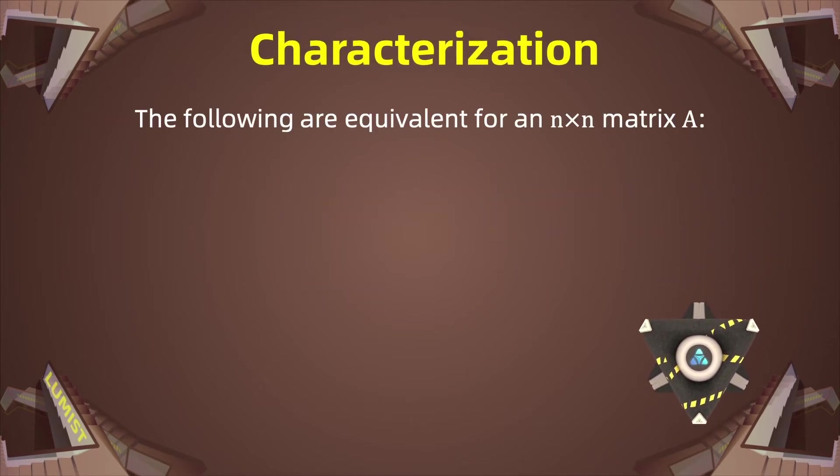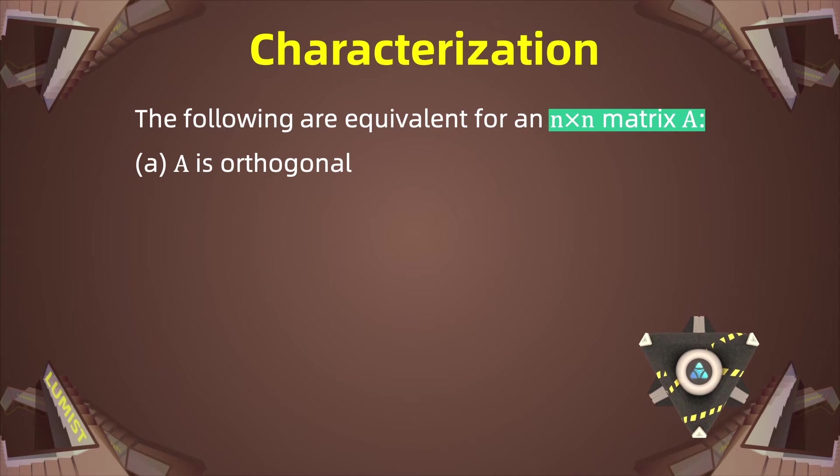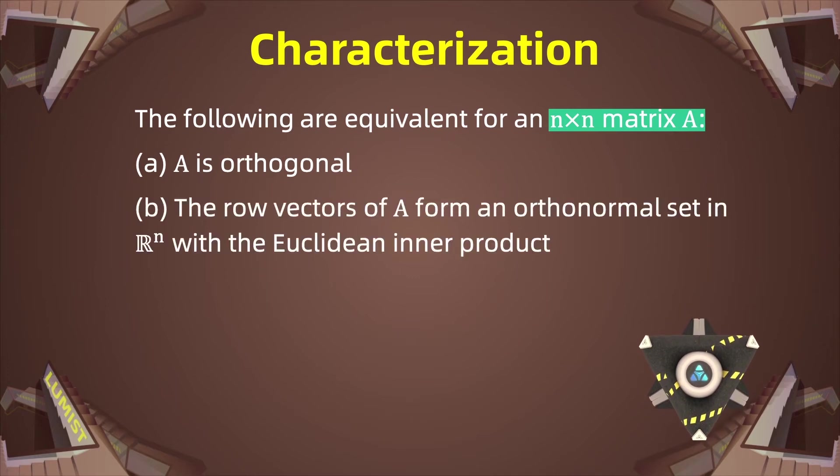At this point, you might be wondering if there is another way to check that a matrix is orthogonal. The answer is yes. Suppose, for example, that we have an N times N matrix A. Then A is orthogonal if and only if the row vectors of A form an orthonormal set in Rn. This is very important. They must form an orthonormal set.